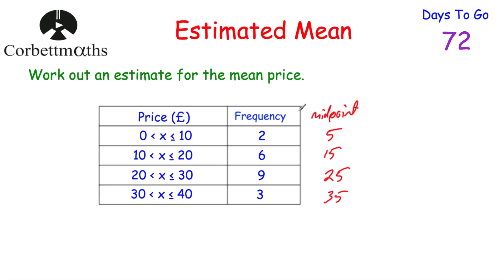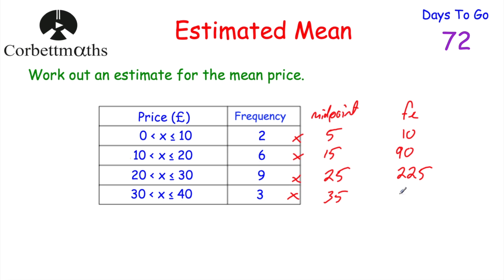To work out the mean we add up all the values, so we multiply each frequency by its midpoint. I'm going to add on a column called the FX column. So 2 times 5 equals 10. Six items at £15 each: 6 times 15 equals 90. Nine items at £25 each: 9 times 25 equals 225. And three items at £35 each: 3 times 35 equals 105.